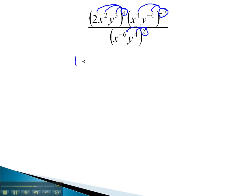2 to the 4th is 16, x to the 8th, y to the 12th, times x to the negative 8th, y to the positive 12th, multiplying our exponents by negative 2, over x to the negative 12th, y to the 8th.